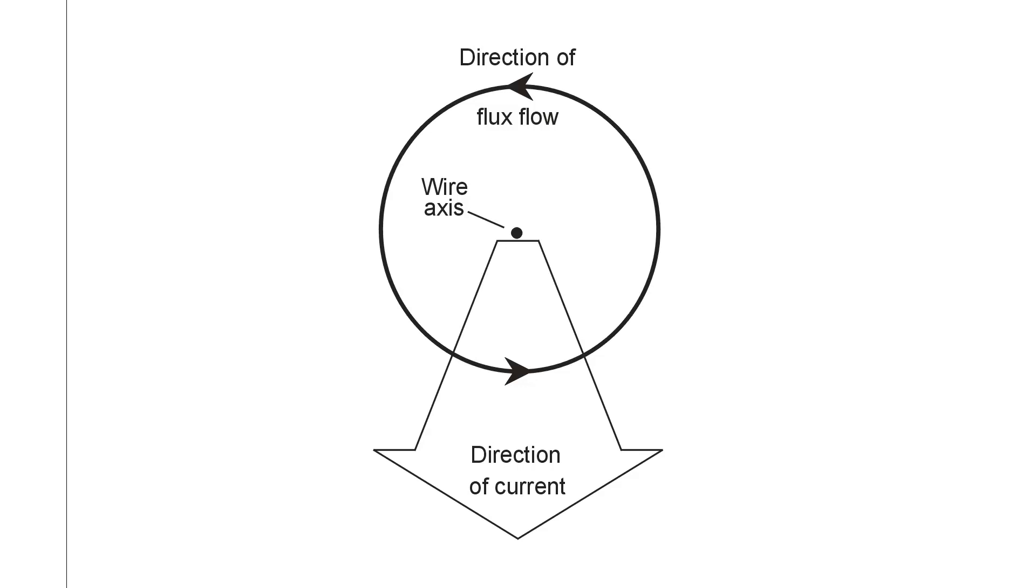Any current in a straight wire, or in any wire, always sets up a magnetic field. If the current is a direct current and of constant amplitude, the magnetic field will have a constant direction and a constant amplitude. And that's the case in this illustration.